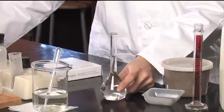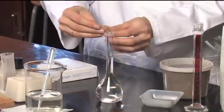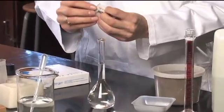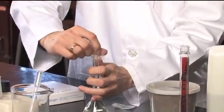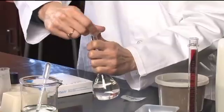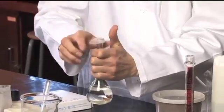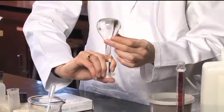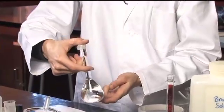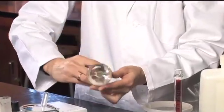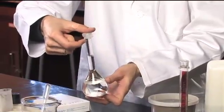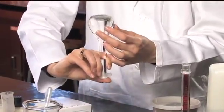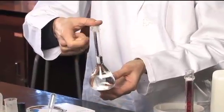Then we want to mix this solution thoroughly. So I'm going to use a piece of parafilm to seal the top and invert the flask about 15 times making sure that that air bubble goes all the way to the bottom of the flask and all the way to the top of the neck with each mixing.